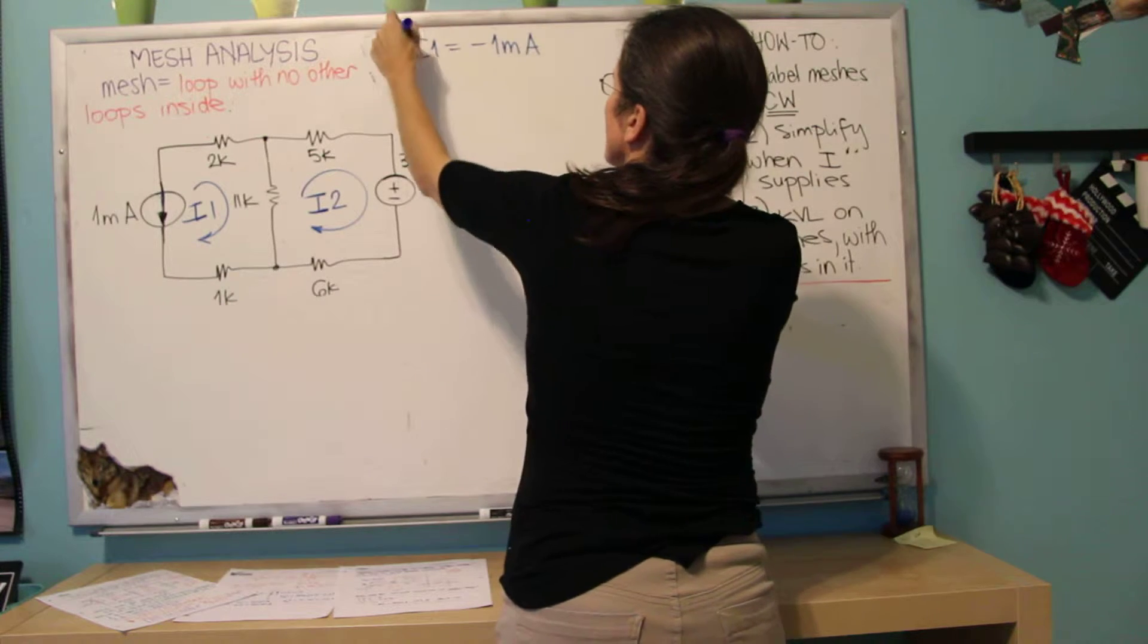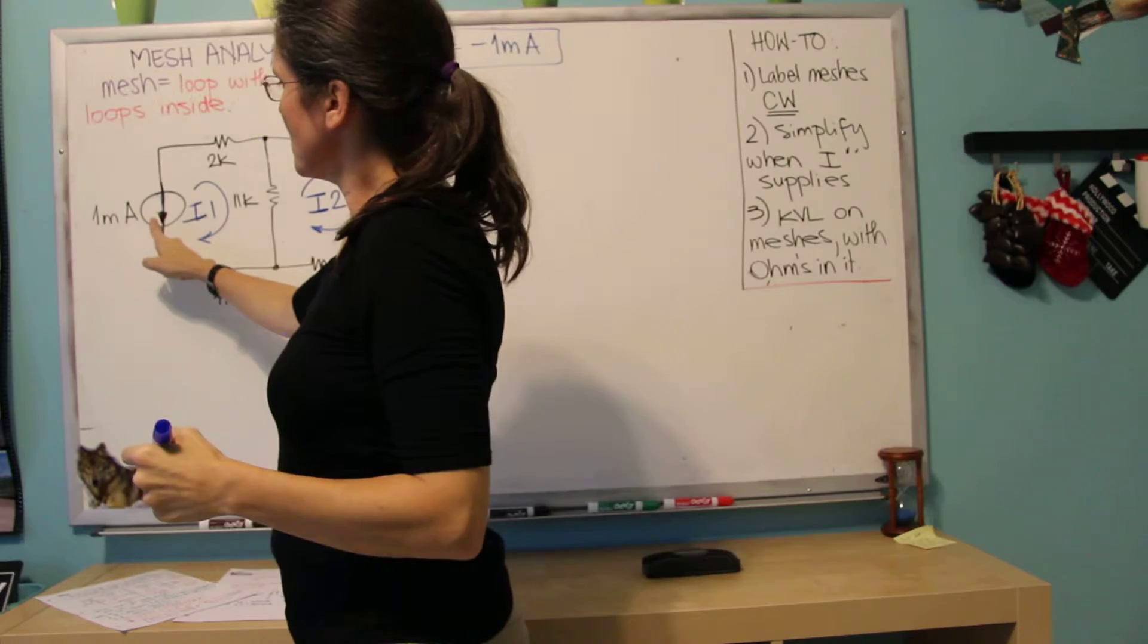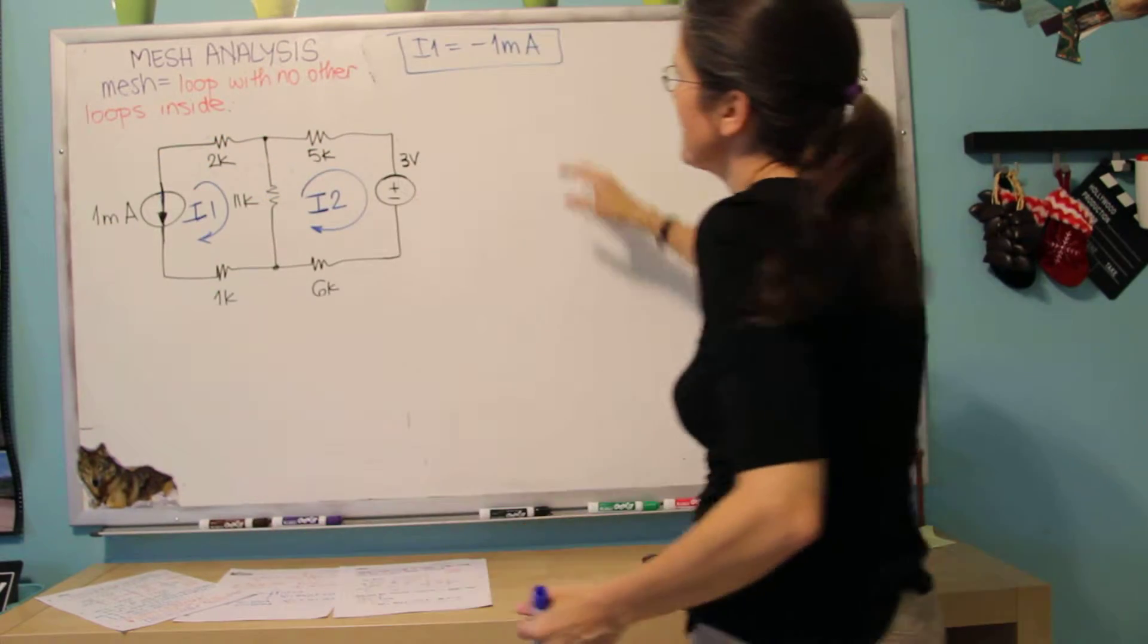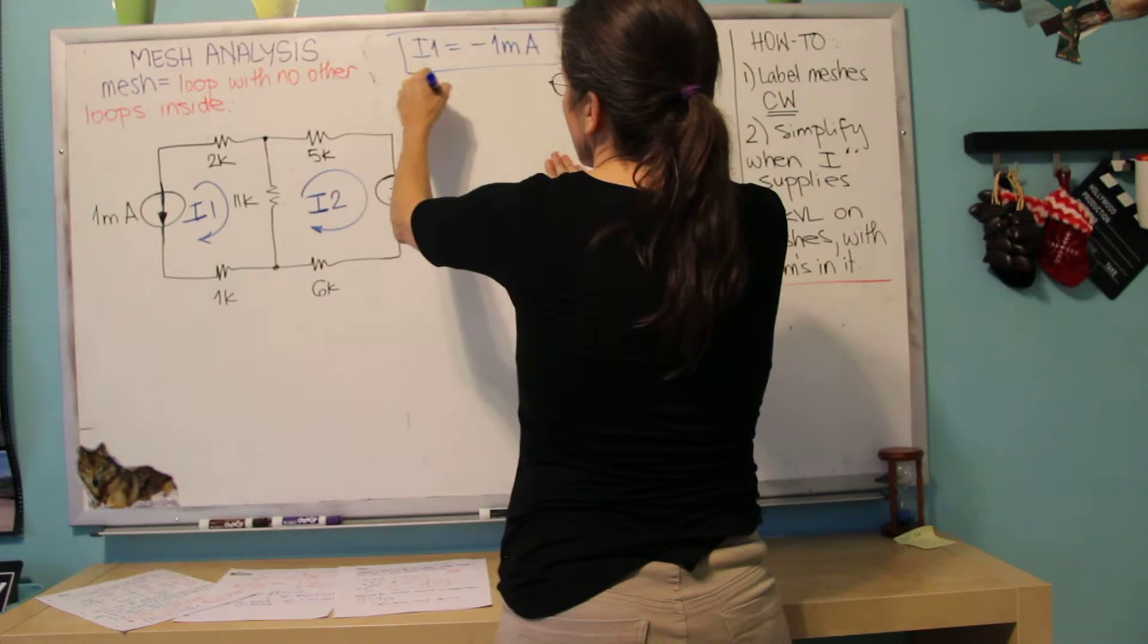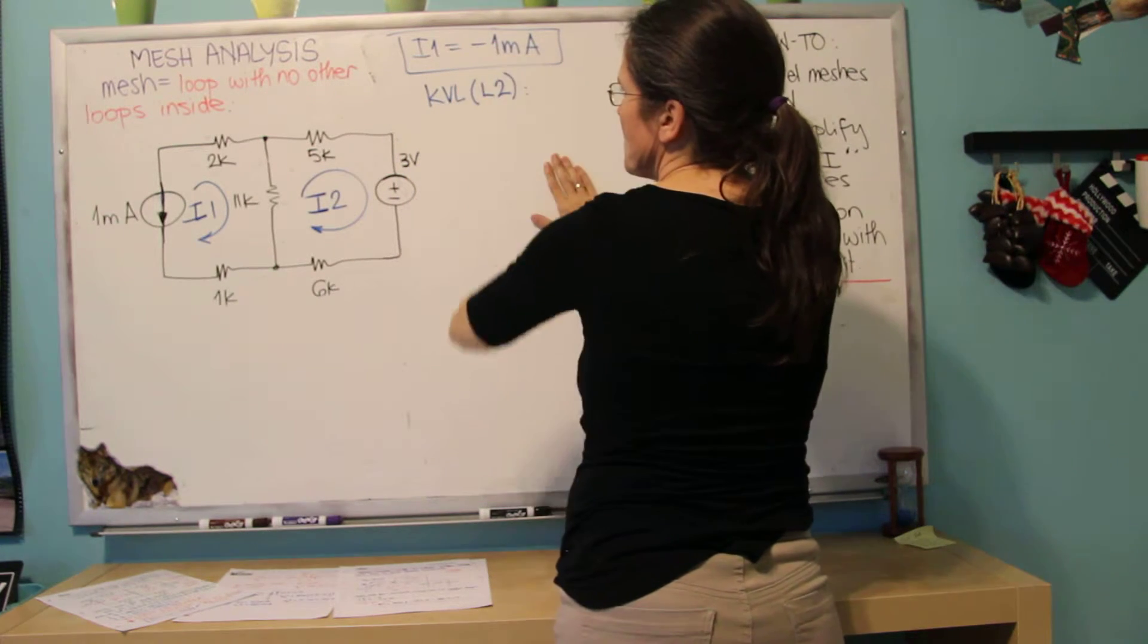So if it had been in the other direction, in the same direction as I1, then it would be 1 milliamp, but this is going down, and therefore it's minus 1. And now I only need to write the KVL for the other mesh, for loop 2, or mesh 2.